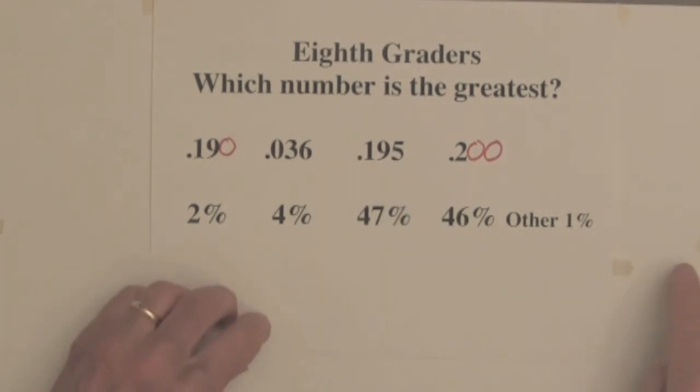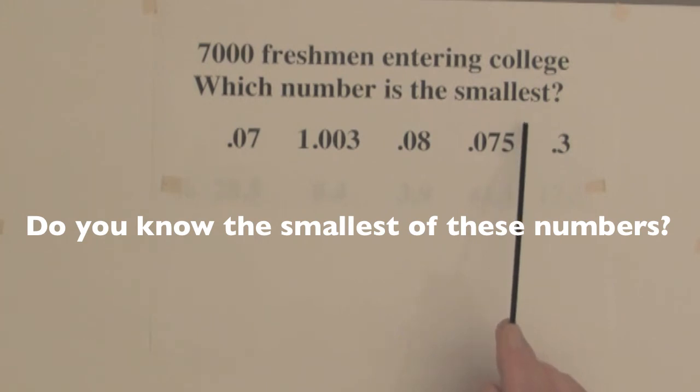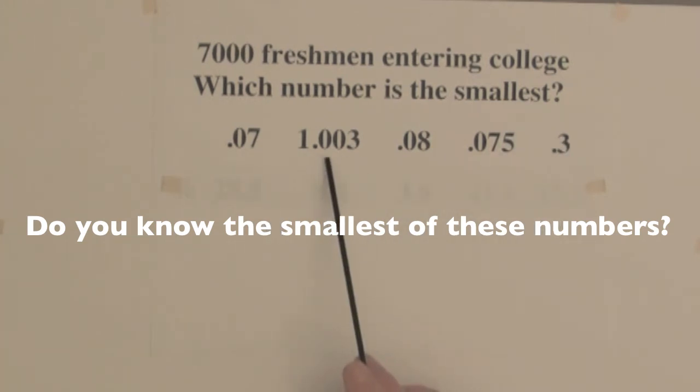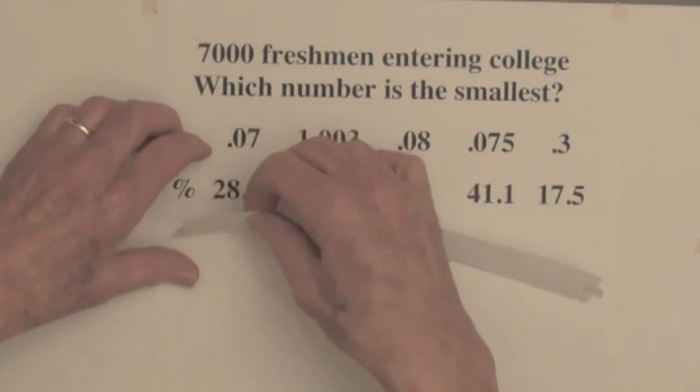Even some college students have trouble with decimal inequalities. This question was given to seven thousand freshmen entering college. Which number is the smallest? Notice we have decimals here and one mixed decimal. Let's see how these college students did on this question.